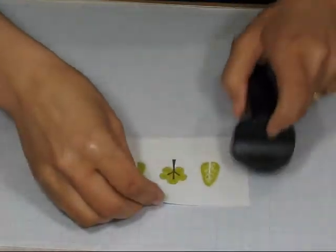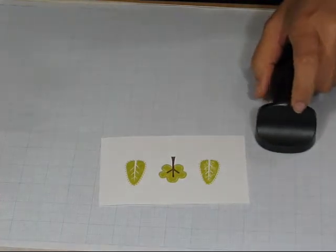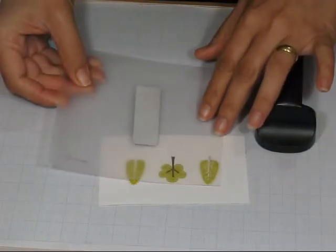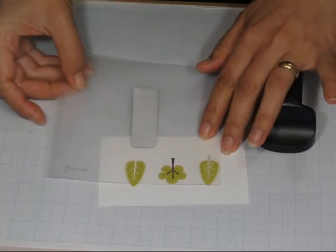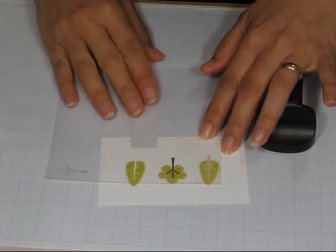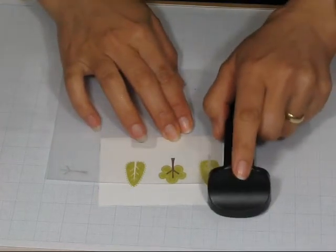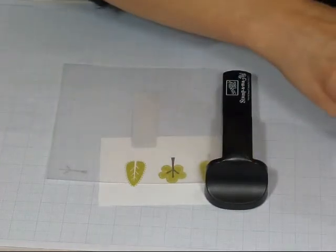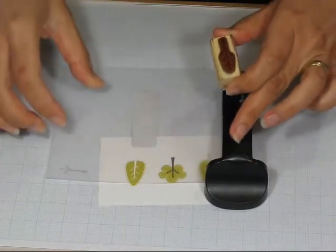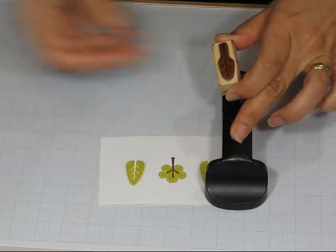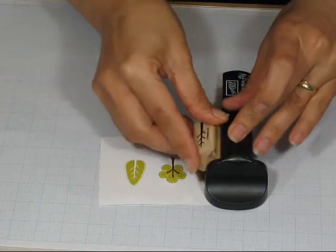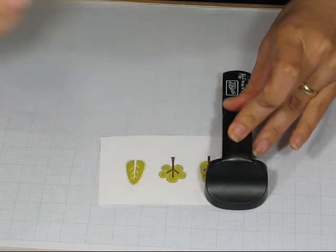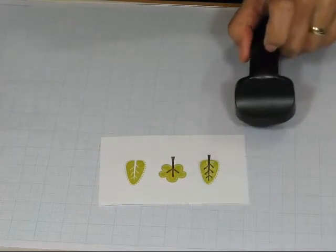Now I'm just going to do the same with my second tree trunk. I'm going to line that up inside my tree top. Put my placeholder in place. Ink up my tree trunk stamp. Hold my placeholder steady and then pop my stamp down.